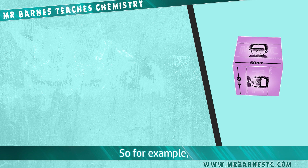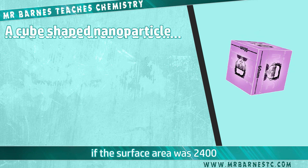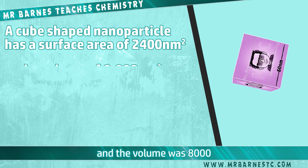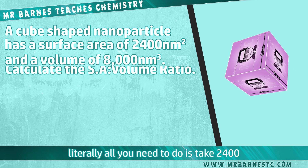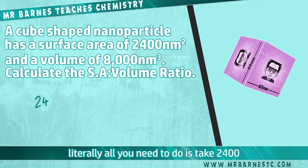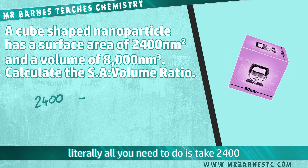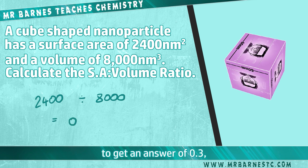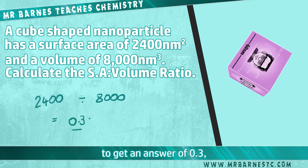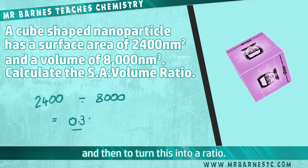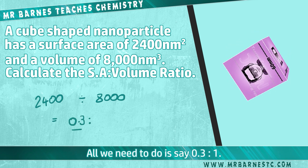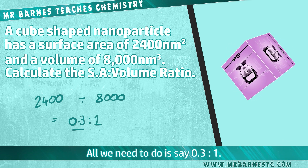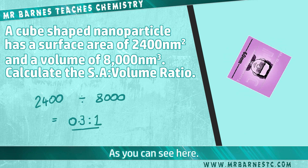For example, if the surface area was 2400 nanometres squared and the volume was 8000 nanometres cubed, all you need to do is take 2400 and divide it by 8000 to get an answer of 0.3, and then to turn this into a ratio all we need to do is say 0.3 to 1, as you can see here.